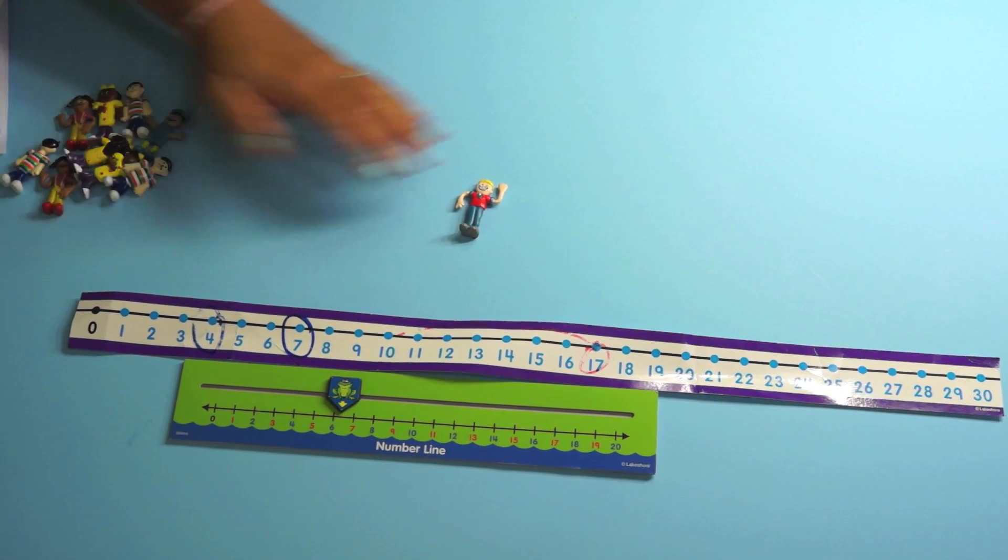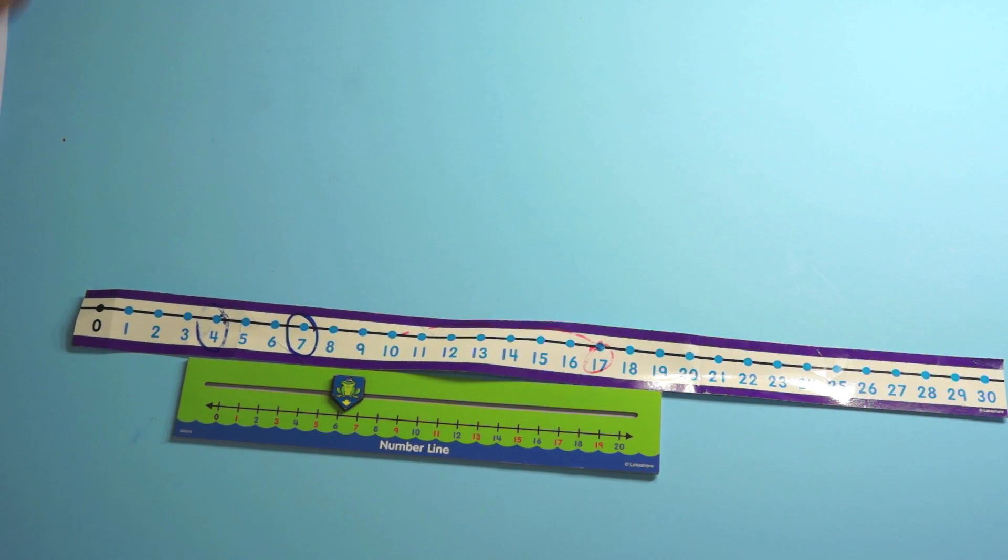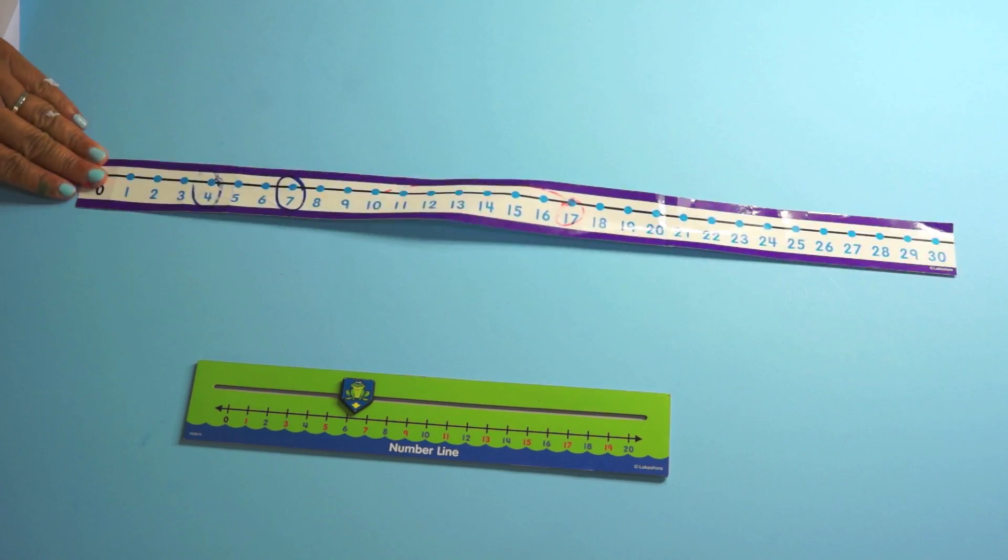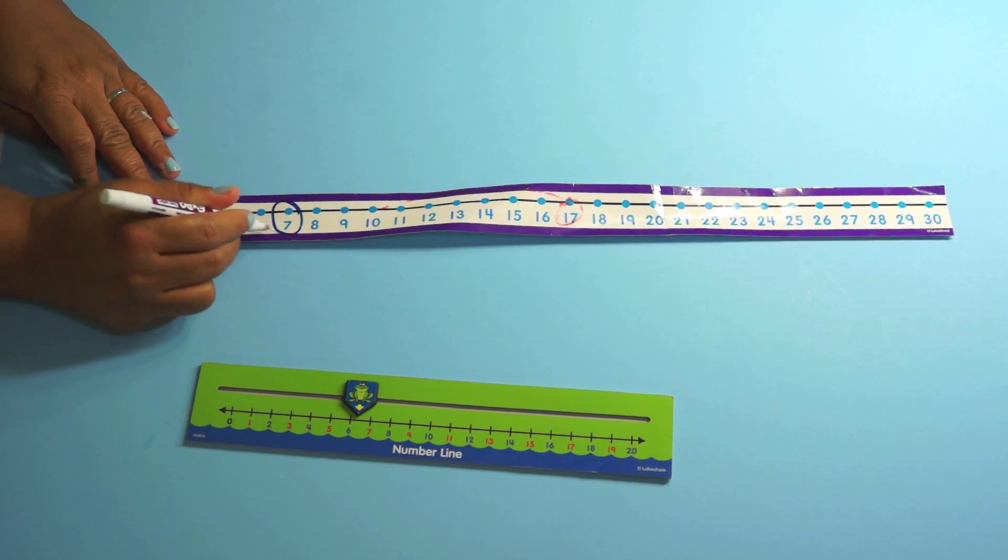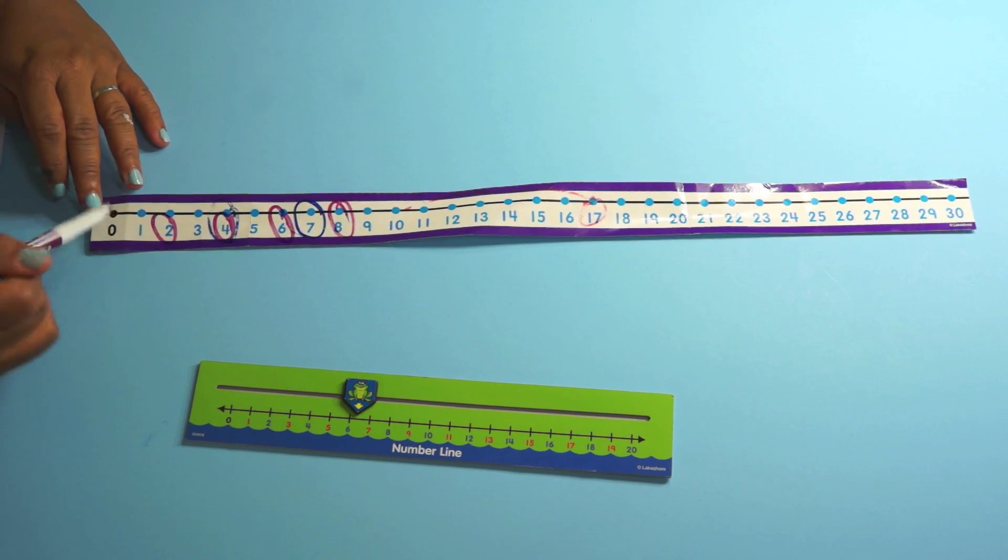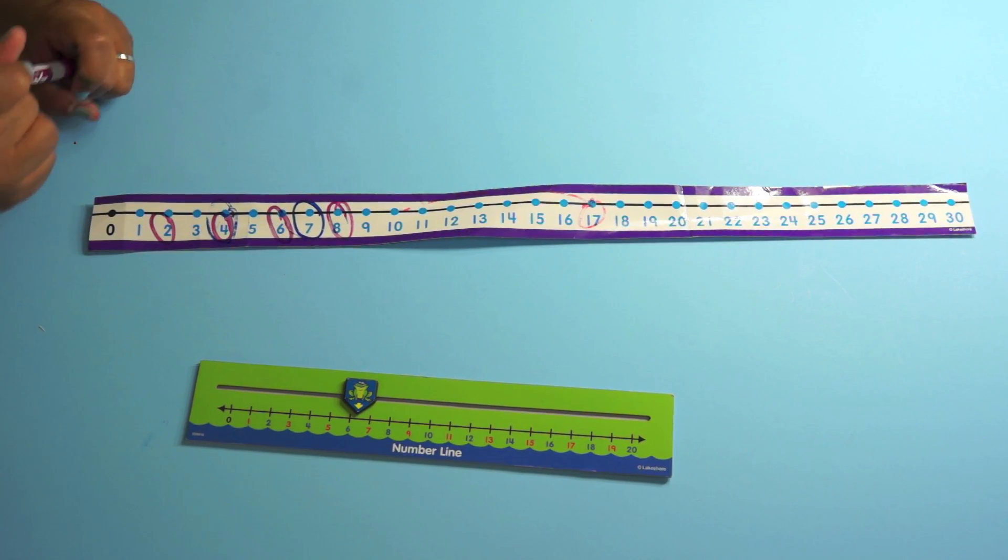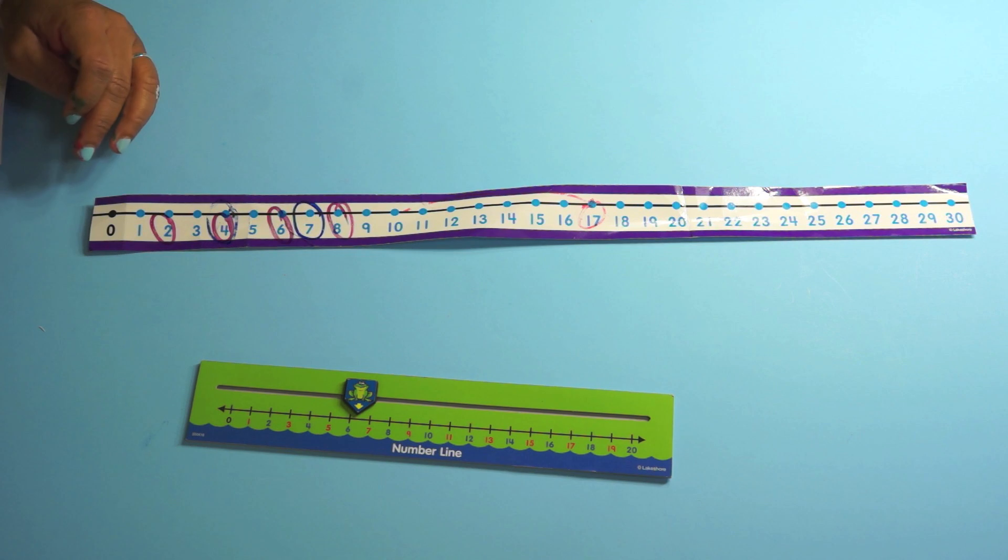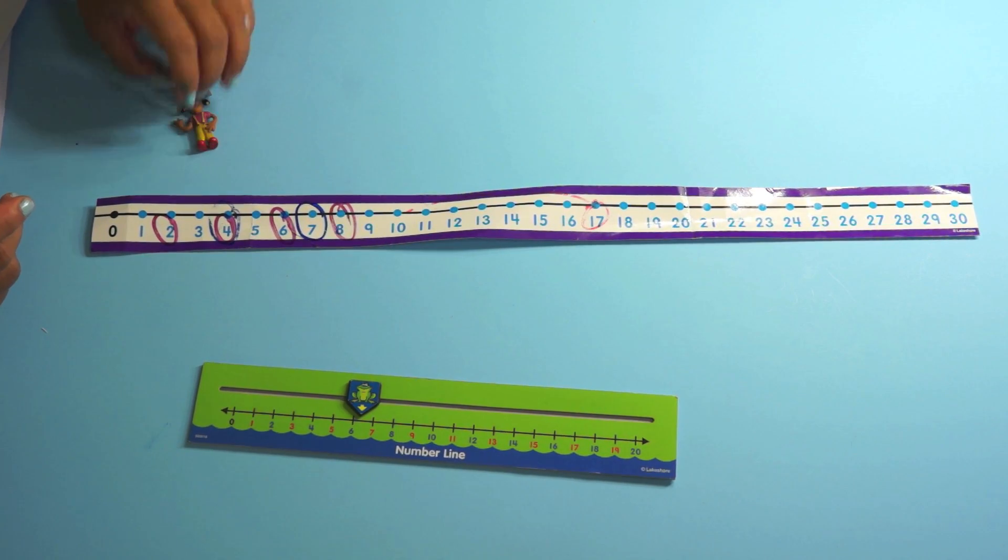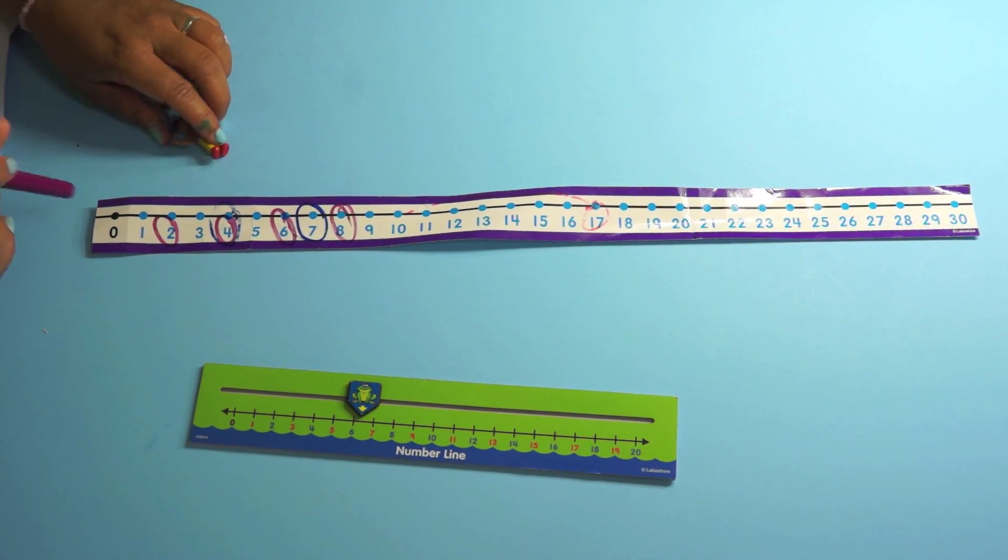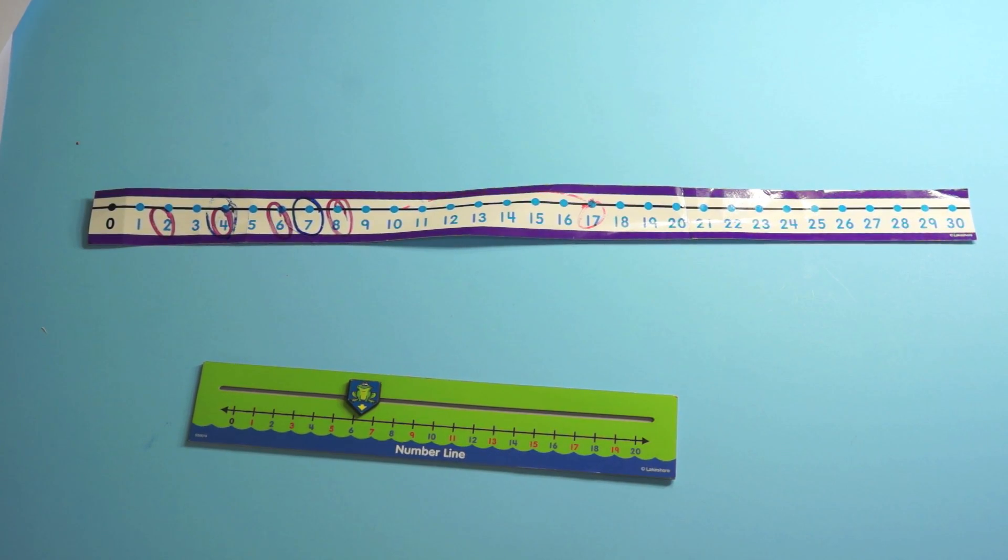So you want to do some stuff where kids associate the quantity with the count. And then you do some of the more abstract things where you take number lines or you take number grids and you have kids do the skip counts. But what you have to realize is this is really abstract. Remember you always want to teach concrete, pictorial, abstract. So concrete would be doing it with the kids.